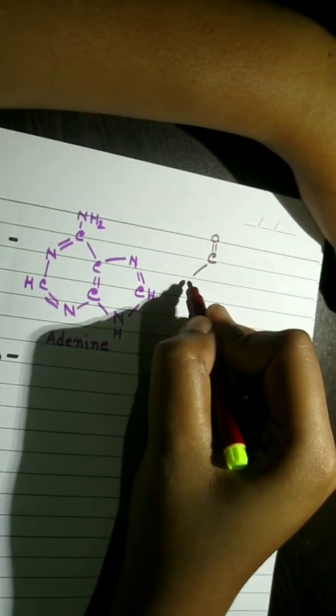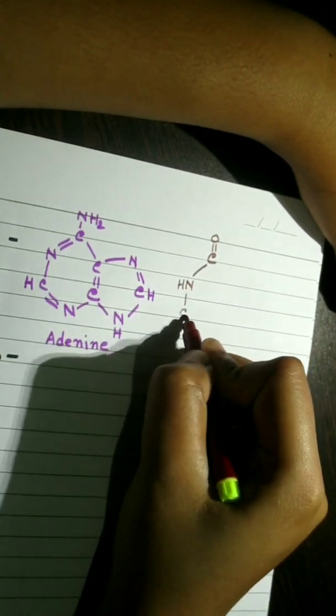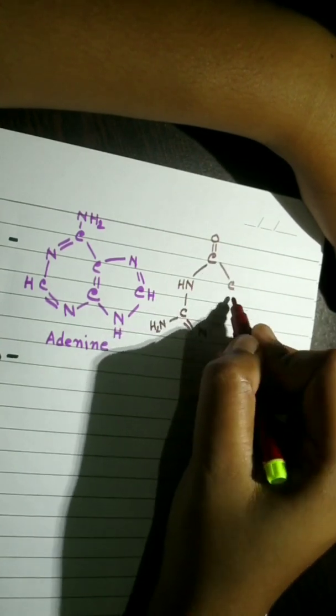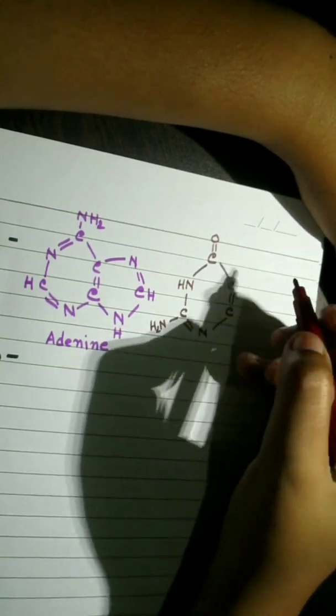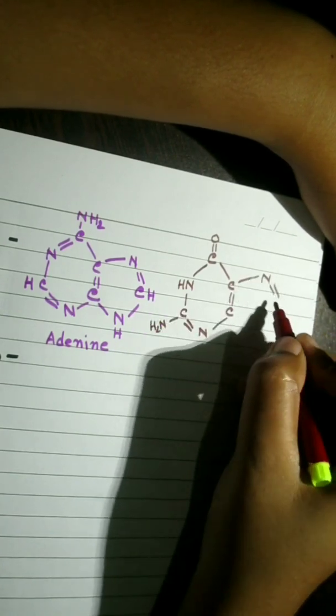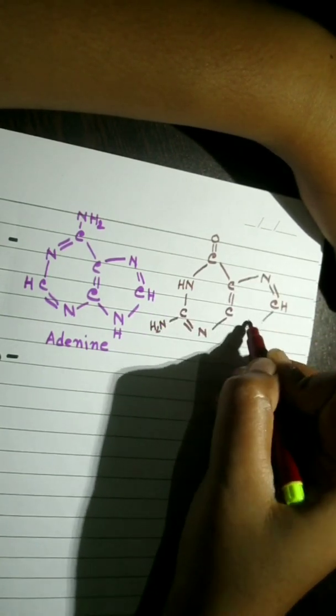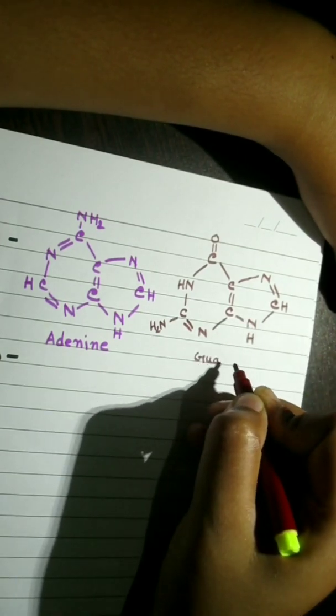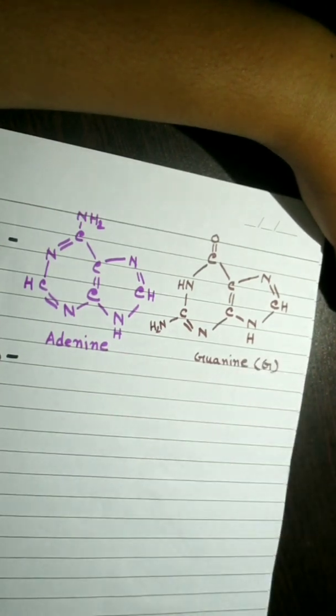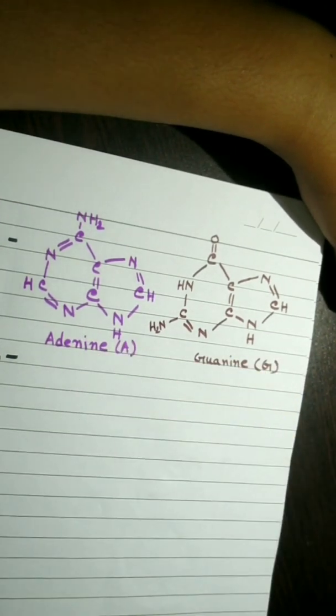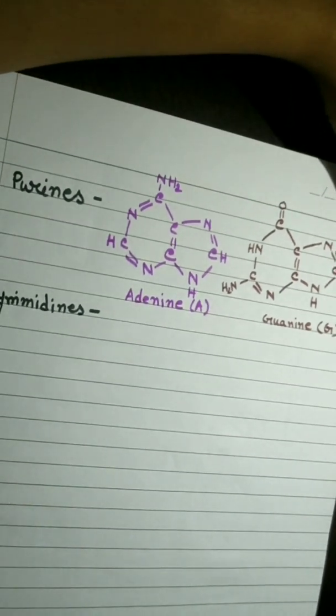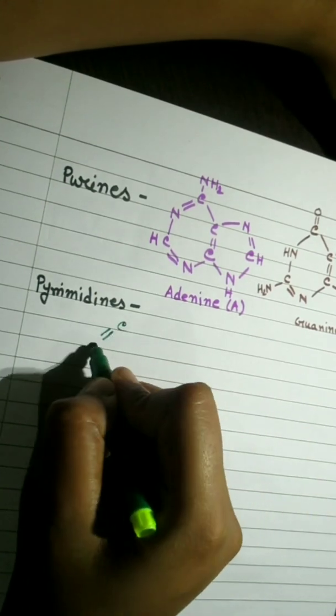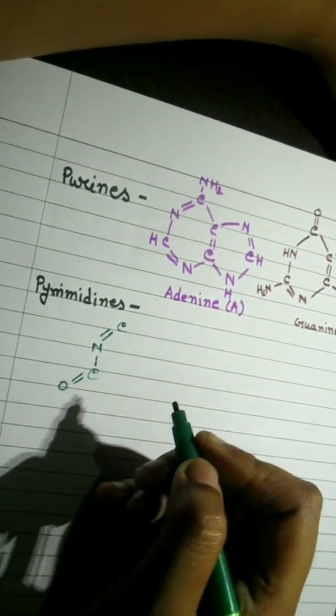The number of rings the base has determines whether the base is purine, i.e. 2 rings, or a pyrimidine, i.e. 1 ring. The purines on one strand of DNA form hydrogen bonds with the corresponding pyrimidines on the opposite strand and vice versa to hold the two strands together. Within DNA molecules, this is their most important function and is known as base pairing.